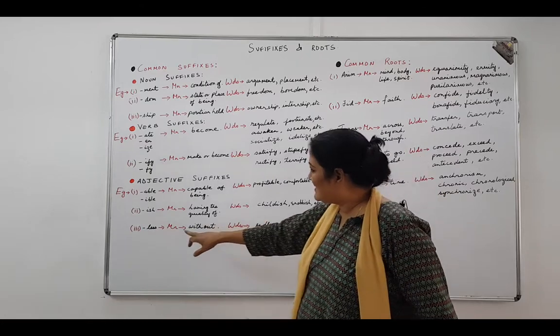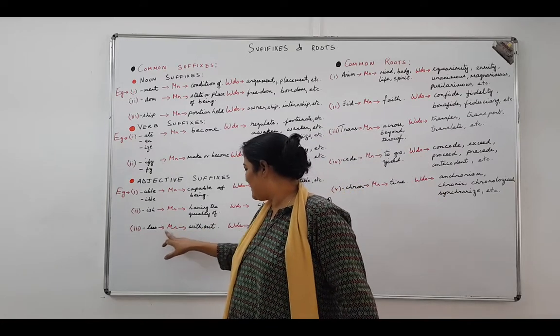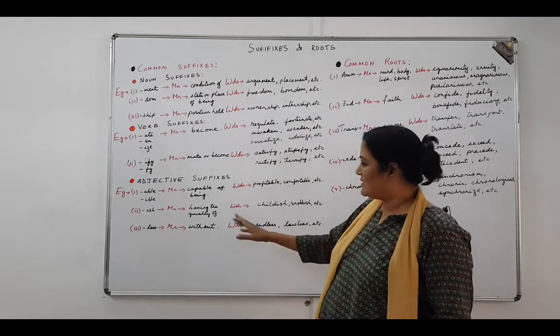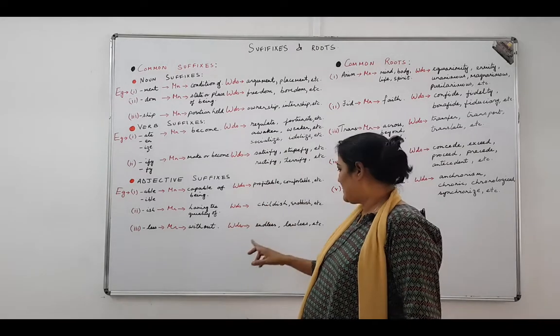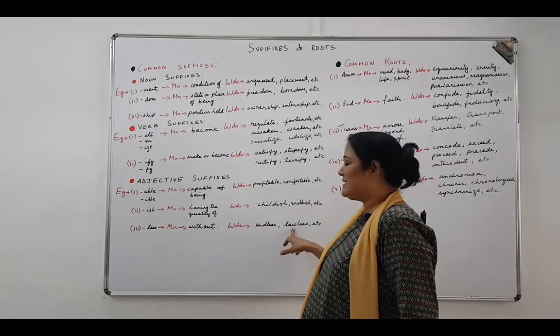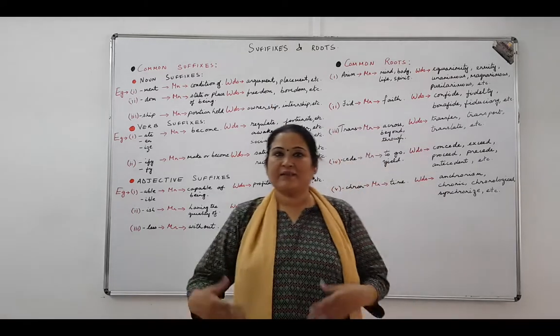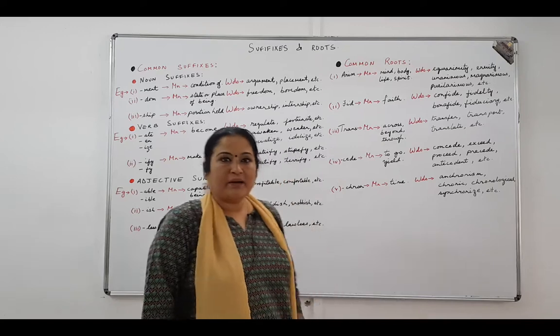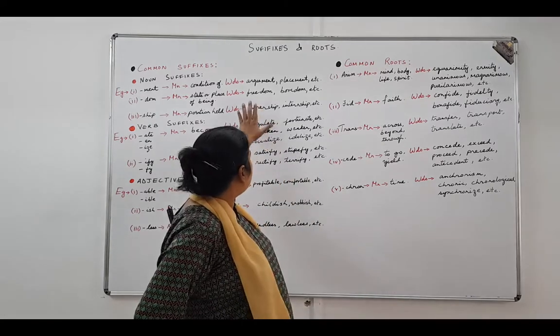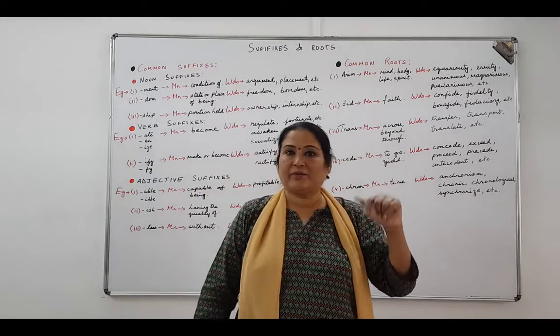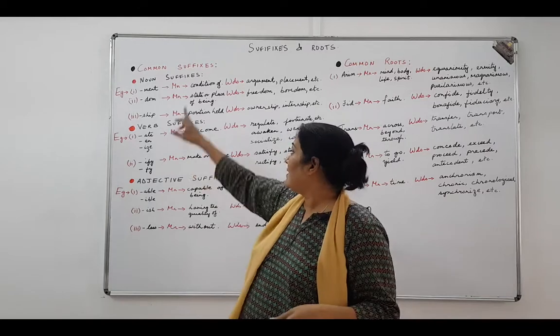The third one is l-e-s-s. The meaning is without. So this will take away that quality. Examples: endless, lawless. So these are the different suffixes and the form in which they come to you in grammar. In grammatical performance and function, they could be verbs, adjectives, or nouns.